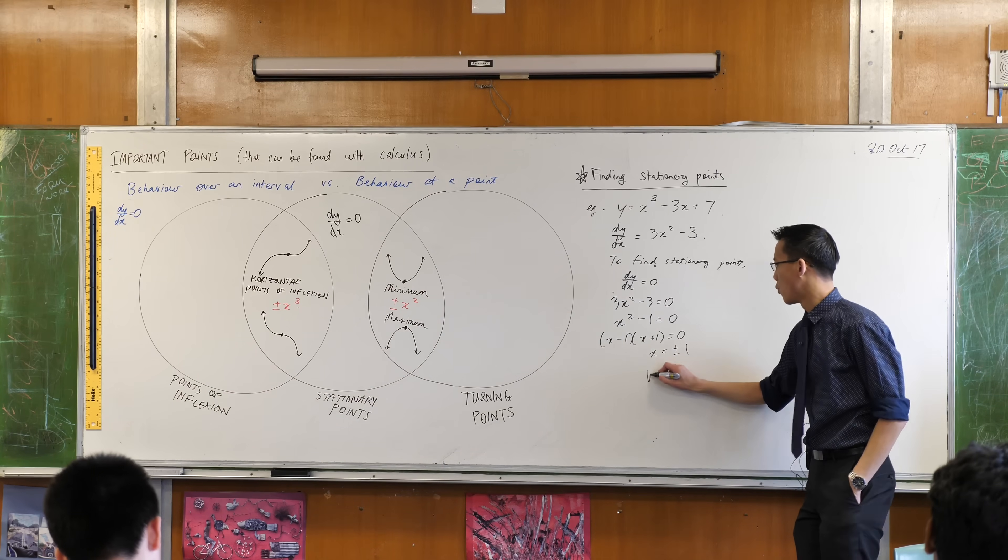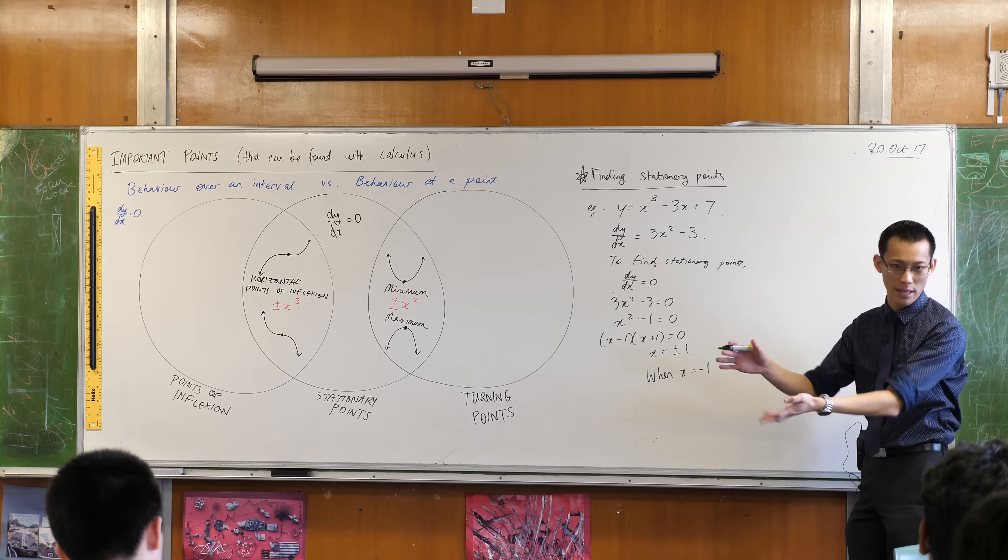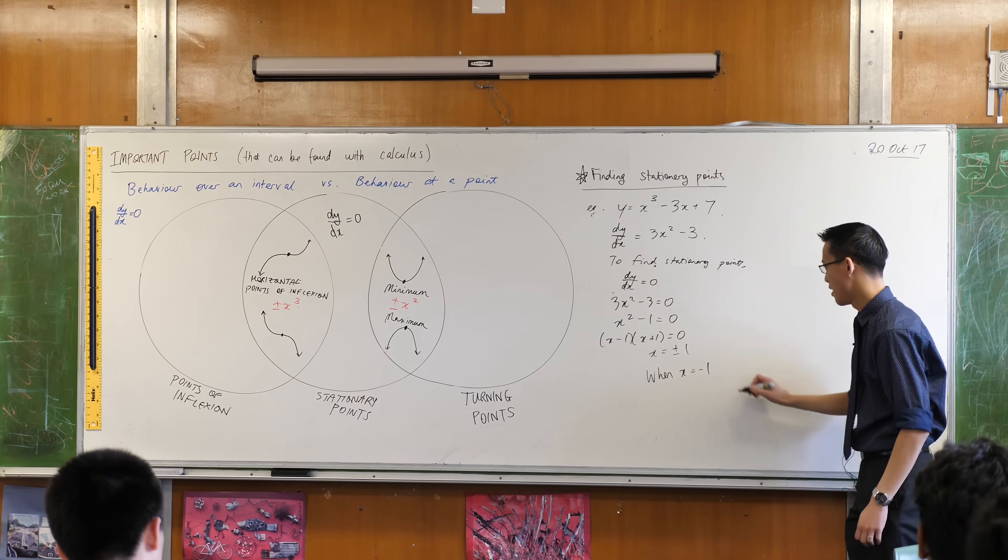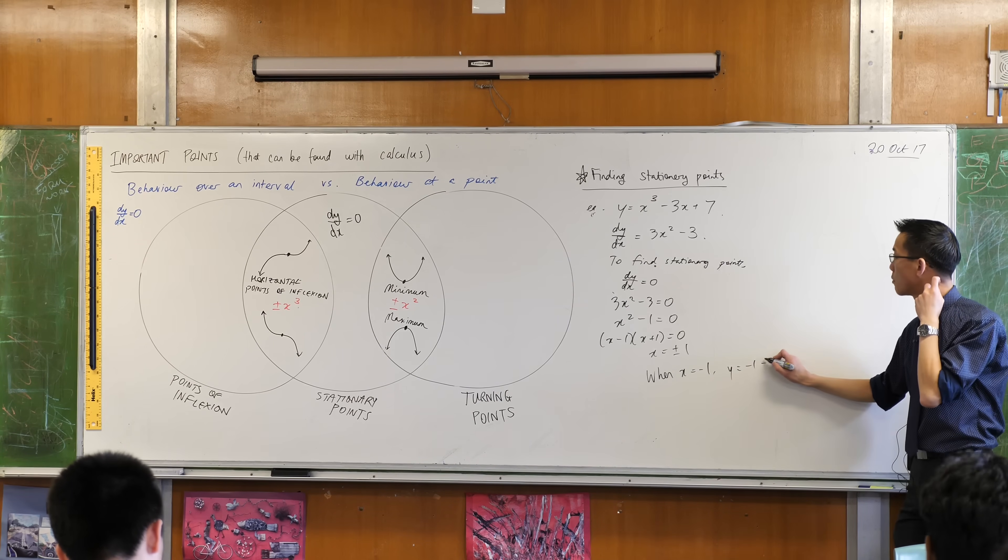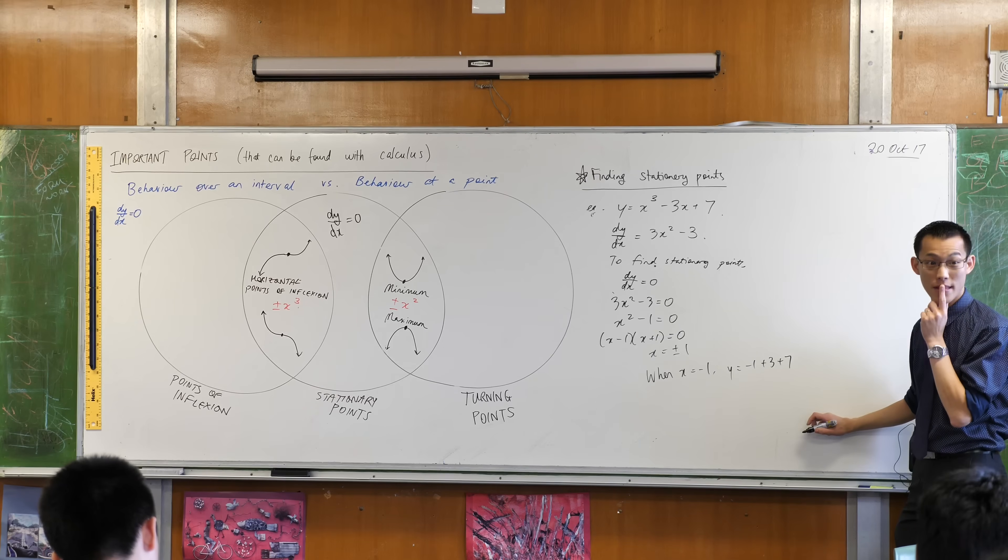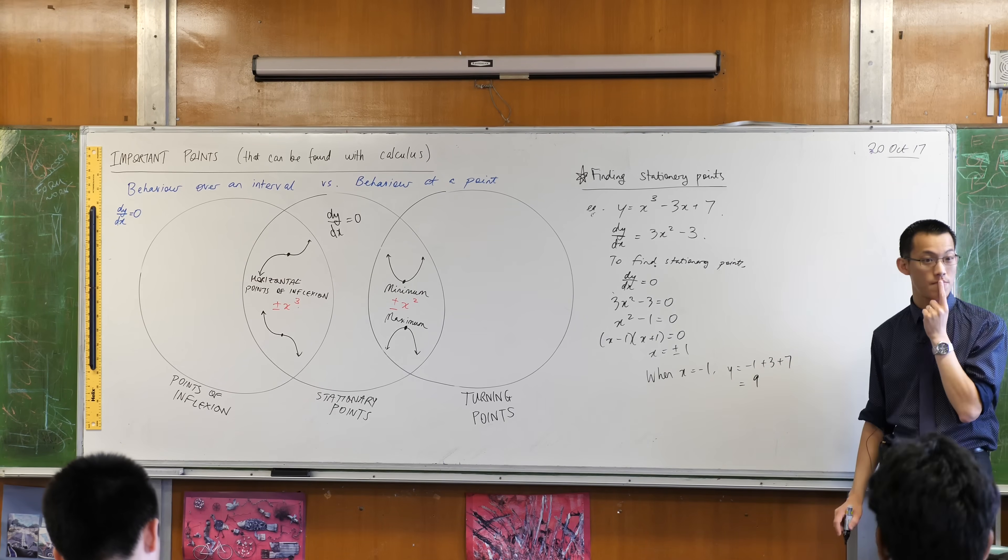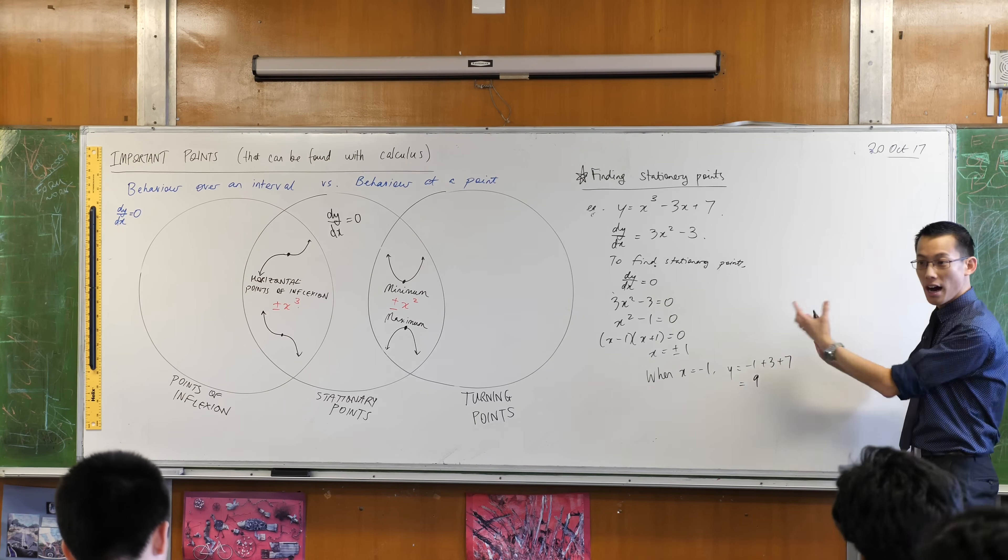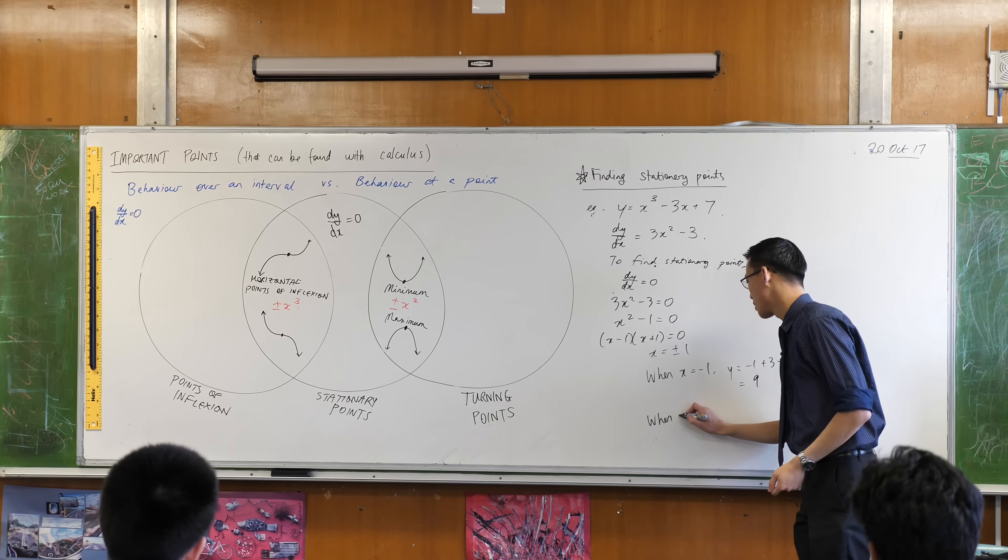So what I'm going to say is when x equals, and I'll just take them one at a time, I usually go from left to right so we'll start with negative 1. When x equals negative 1, y equals let's have a look: negative 1 plus 3 plus 7. How's that look? Are you happy with that? That sounds like 9. Is that alright?